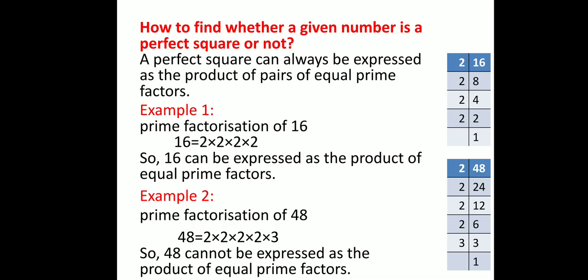Taking another example, the prime factorization of 48 gives 2 into 2 into 2 into 2 into 3. Here, 2 into 2 is a complete pair, and again 2 into 2 is another complete pair, but 3 is left unpaired. So we can say that 48 is not a perfect square — 48 cannot be expressed as the product of equal prime factors. To find out whether a given number is a perfect square, we do prime factorization; if it can be expressed as the product of pairs of equal prime factors, then it is a perfect square.